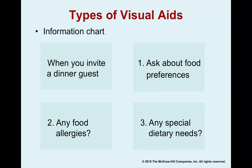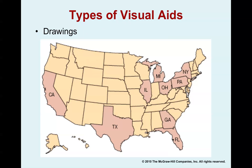An information chart, also called a list of key ideas, can be presented on PowerPoint slides, as a poster, or on transparencies for an overhead projector. If possible, present only one item at a time so you don't overwhelm the listener. For example, when inviting a dinner guest: number one, ask about food preferences; do they have any food allergies; and any special dietary needs? You can use informational charts for organizing these kinds of sequential points.